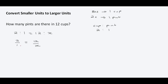Let's go ahead and cross product this. We have 2 times x equal to 12 times 1. We divide by 2, so x is 12 divided by 2, which is 6. So 12 cups equals 6 pints.